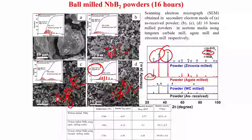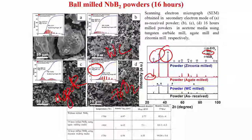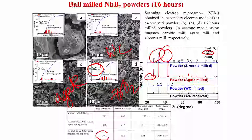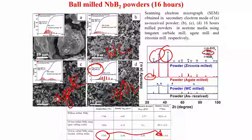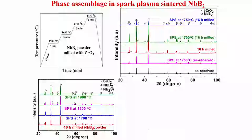As far as sintering and densification is concerned, at 1750°C niobium boride after spark plasma sintering is sintered to 99.5% sintered density.